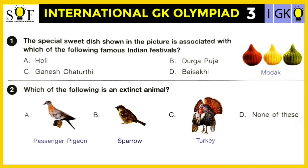Question number one: The special sweet dish shown in the picture is associated with which of the following famous Indian festivals — Holi, Durga Puja, Ganesh Chaturthi, or Baisakhi? The correct answer is Ganesh Chaturthi. Modak is Lord Ganesha's favorite sweet and is especially made during Ganesh Chaturthi.